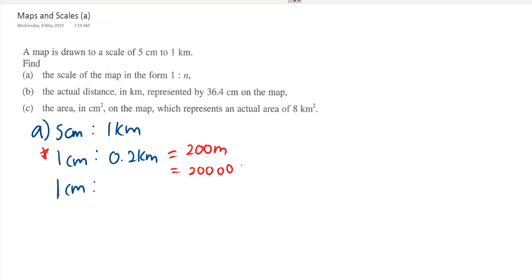So now we will write down that 1 cm equals 20,000 cm. Once you make to the same unit, remove the units and there you go, this is the answer for part 1: 1 is to 20,000. The most important step here is make the same units.